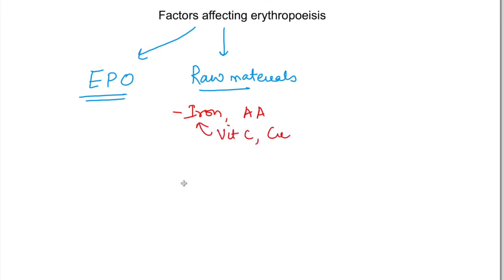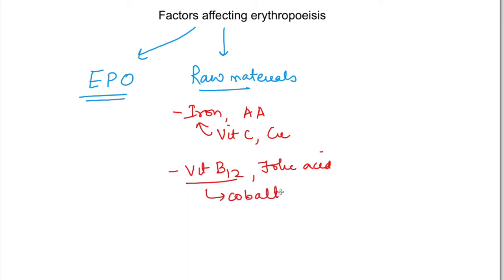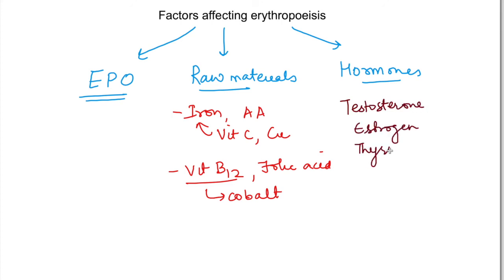So we have seen the main factors affecting erythropoiesis: erythropoietin as the main protein, copper for iron transport, and for DNA maturation we need Vitamin B12 and folic acid. Vitamin B12 also works as a cofactor through cobalt. The third category is hormones — testosterone, estrogen, thyroid, and growth hormones. Okay friends, if you liked this video, like and share it with others and don't forget to subscribe to my channel. Thank you so much.